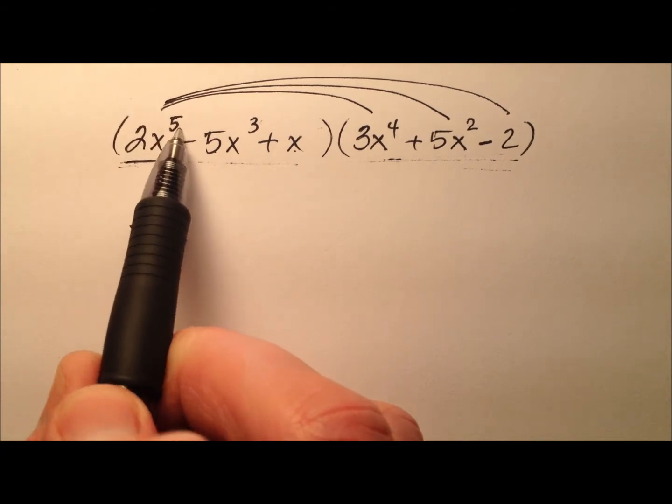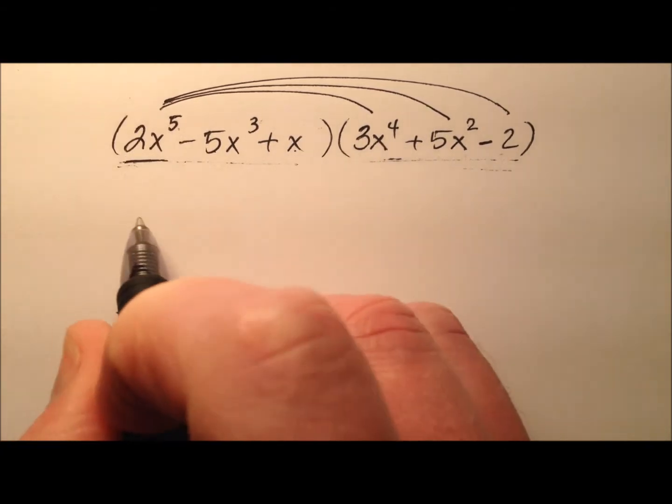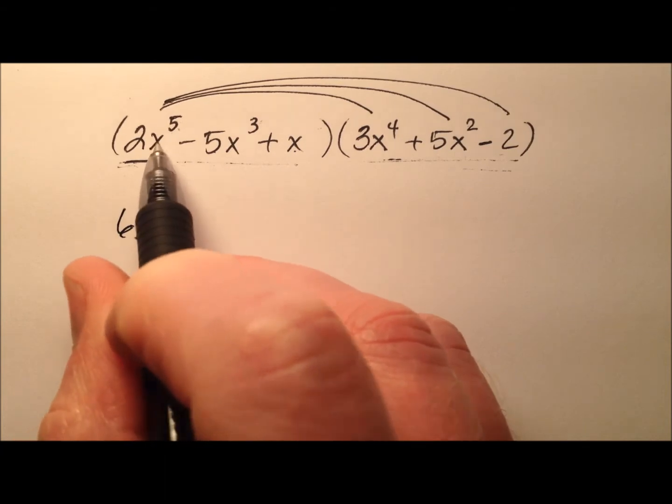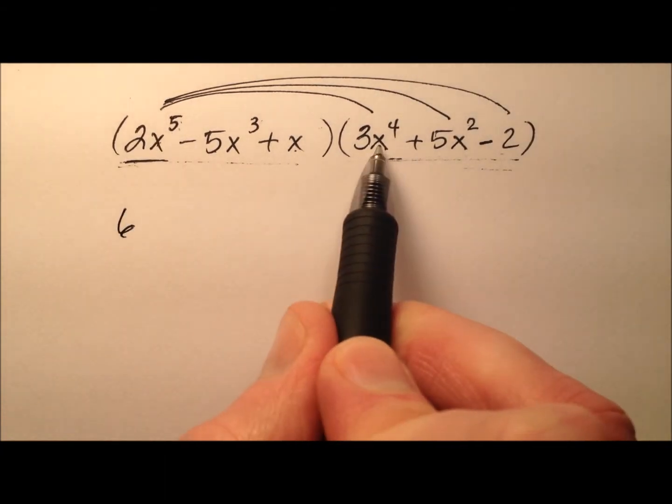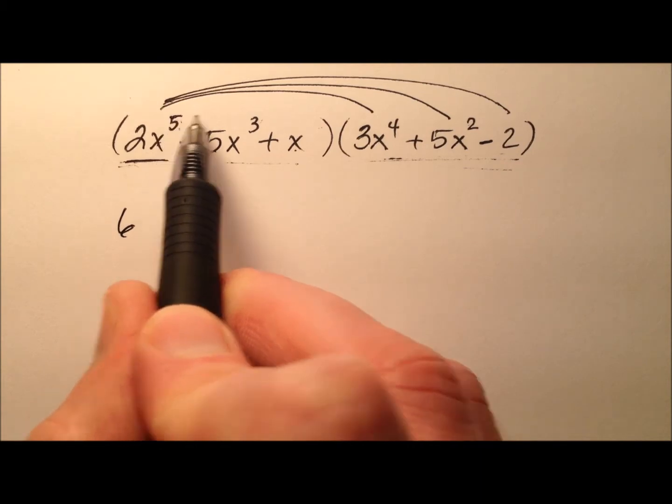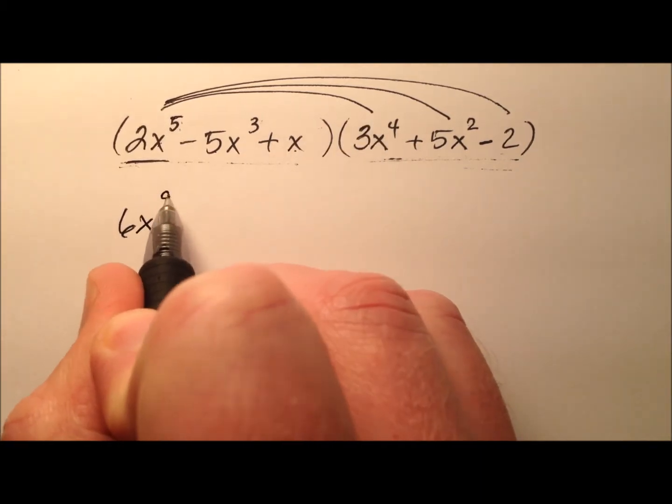So 2x to the fifth times 3x to the fourth. Well, 2 times 3 is 6, and then x to the fifth and x to the fourth, well, they both have x, so same base, and we're multiplying, so let's add those exponents, so x to the ninth.